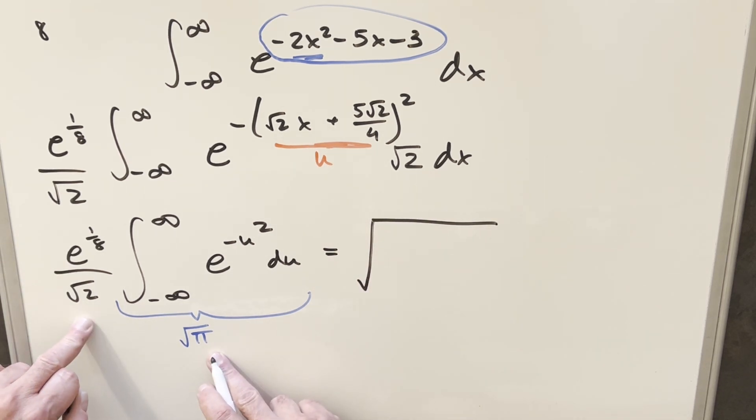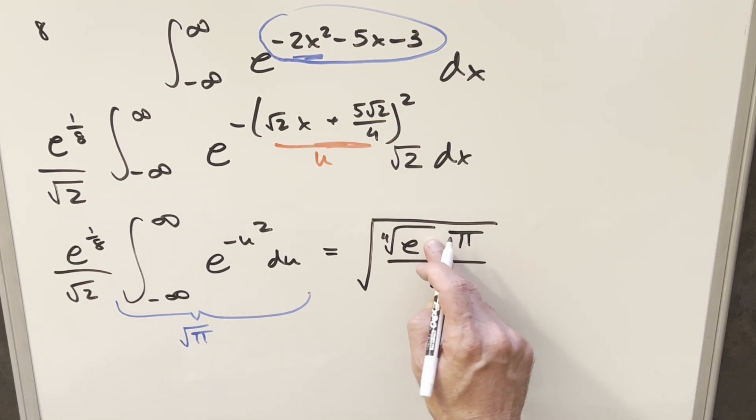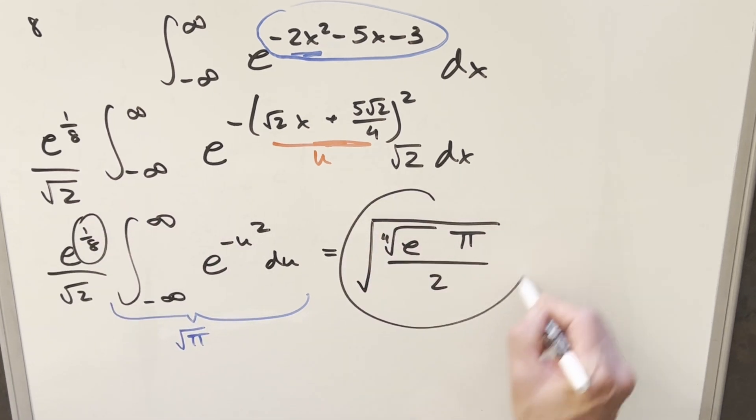So we're going to have just pi over 2 inside here. But then for this, I need to update the exponent, so let's write it as a 4th root of e. Just noticing the 4th root of e is like 1 4th to the 1 half, gets us back to this 1 8th, and that's it.